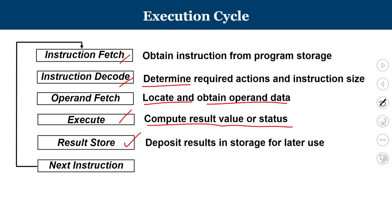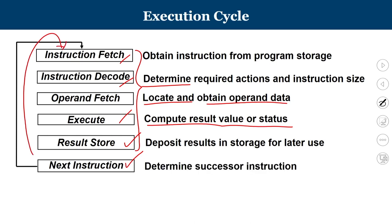Once one instruction's task is complete — fetch, decode, operand fetch, execute, and store the result — the next task is to find out which instruction to fetch next. The process of computing the address of the next instruction happens after that, and then this cycle repeats. This is known as the basic instruction execution cycle.